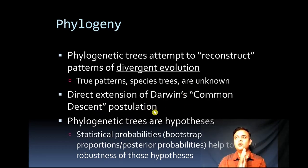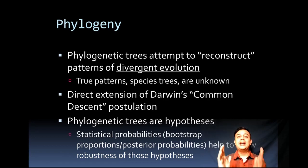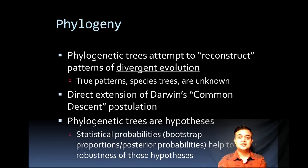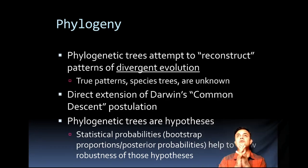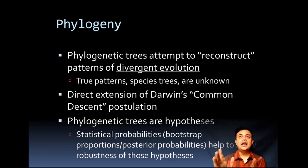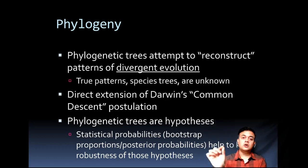Darwin's common descent postulation states that if you look at the current biodiversity, all species on the planet derived from one ancestral species that lived approximately four billion years back — that is the current scientific consensus. From that ancestor, the entire biodiversity on Earth derived. If you construct a giant tree of the entire biodiversity of the planet, with a root representing that first organism four billion years back, that is called the tree of life.